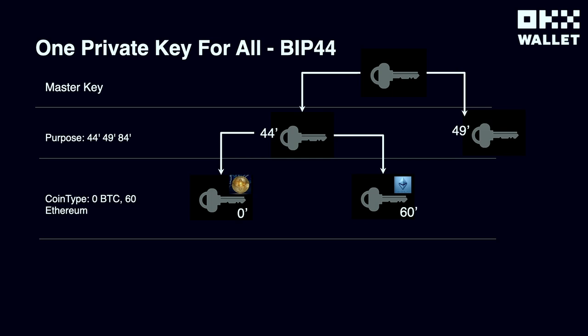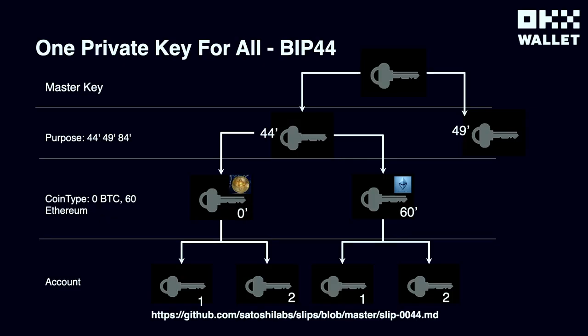That's where BIP44 comes in — a protocol defining the derivation path that all wallet software follows. The first level is the purpose, which can be 44, 49, or 84. The second layer is the coin type — for example, 0 for Bitcoin chain, 60 for Ethereum chain. The next level is the account, where you can create sub-accounts. With just one private key, we can now generate four different child keys to produce four different addresses on two different chains.